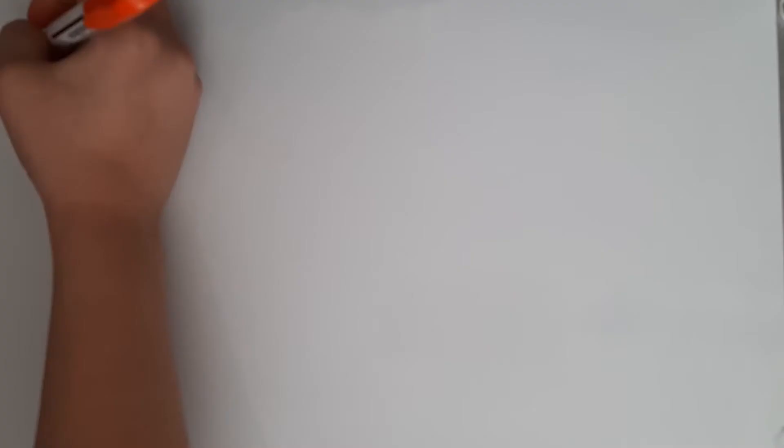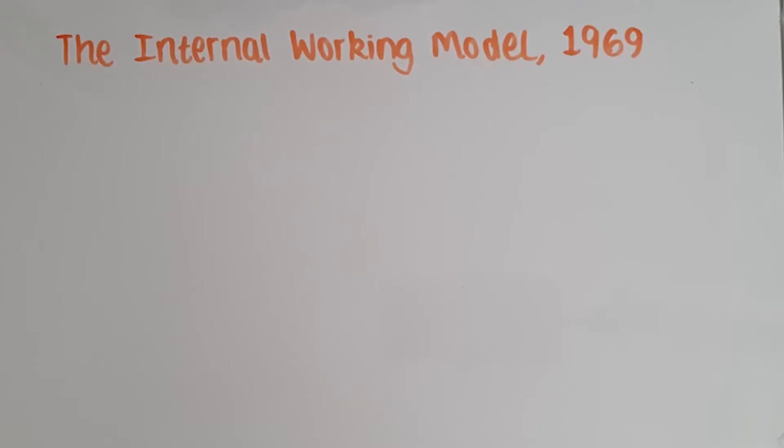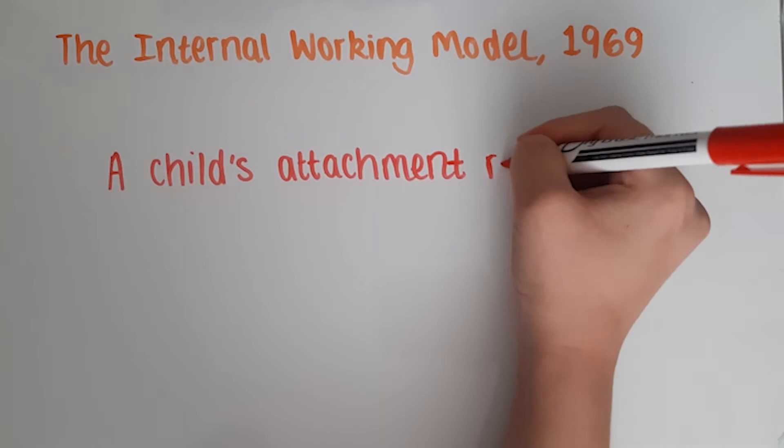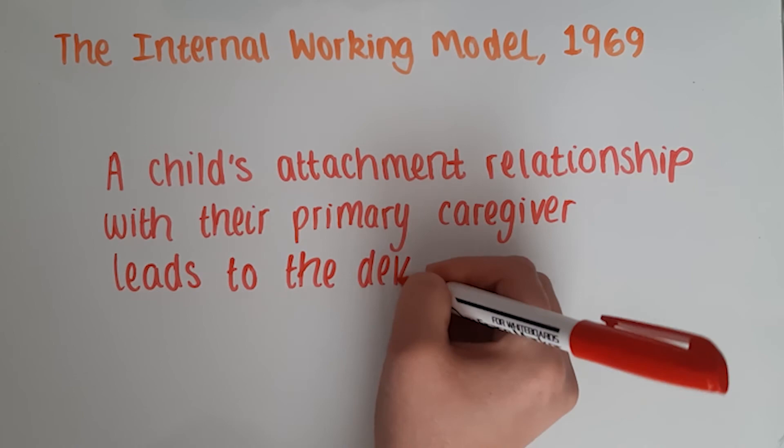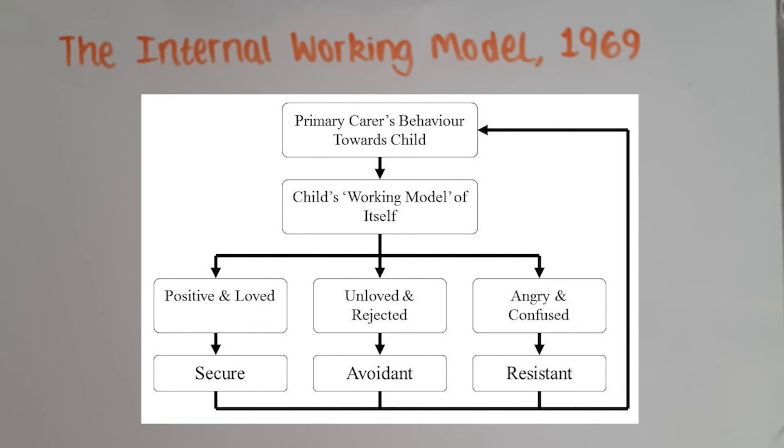In 1969, Bowlby suggested that the child's attachment relationship with their primary caregiver leads to the development of an internal working model. In 1999, Bretherton and Munholland defined an internal working model as a cognitive framework comprising mental representations for understanding the world, self and others. A person's interactions with others is guided by memories and expectations from their internal model. According to Bowlby, the primary caregiver acts as a prototype for future relationships via the internal working model. Around the age of three, these expectations seem to become part of a child's personality and thus affects their understanding of the world and future interactions with others.